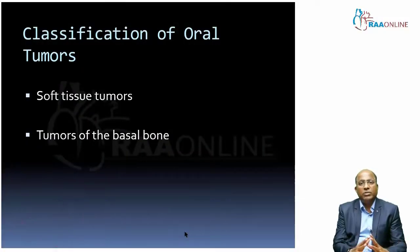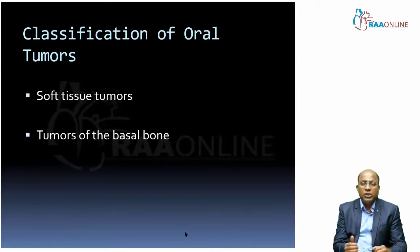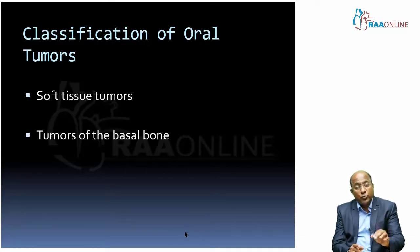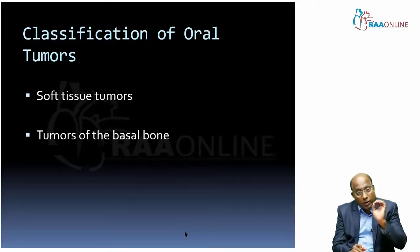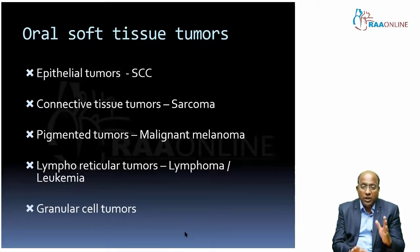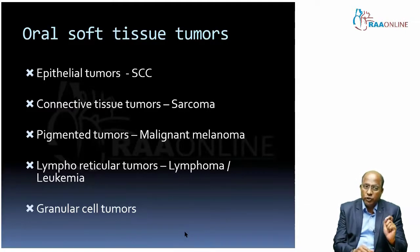Moving on to the classification of oral tumors: in the head and neck area, you can have tumors purely based on soft tissue with no bone involved, or connective tissue tumors arising from bone itself. Generally speaking, when we talk about soft tissue tumors, we mainly talk about epithelial tumors.